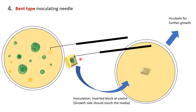After cutting the agar block with the bent needle, you can easily pluck it out using the angle of the bend. Then inoculate that agar block for subculturing. Again, the care should be taken that the growth side should touch the media plate. If you keep the agar block with growth facing upward, the colony will not grow further because the nutrient media is away from the fungal colony. Invert the block, then inoculate so the fungal culture grows properly in your new media plate.